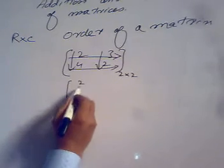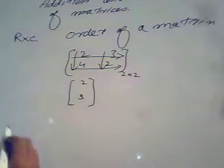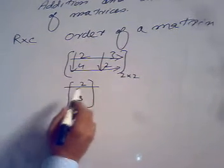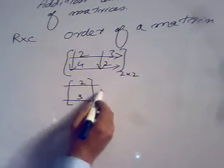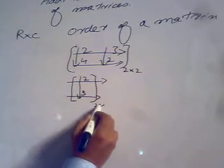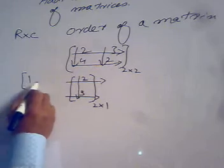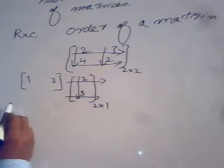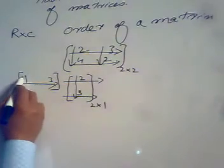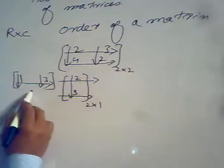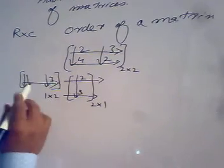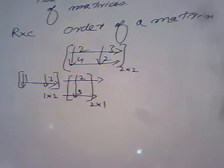Consider another example: suppose the matrix is [2; 3]. Here there are two horizontal lines and only one vertical line, so its order is 2 cross 1. Now for another matrix [1, 3], there is only one horizontal line and two vertical lines, so the order of that matrix is 1 cross 2.